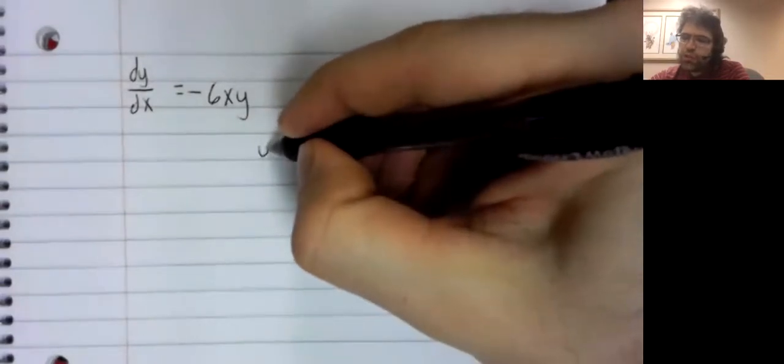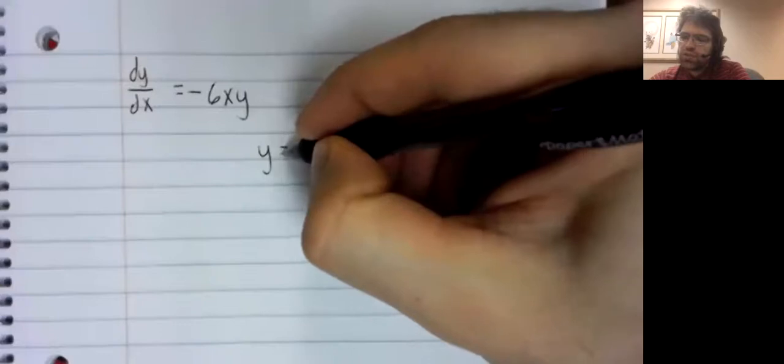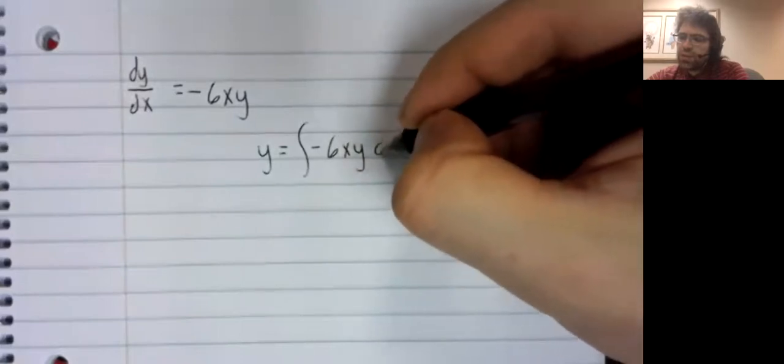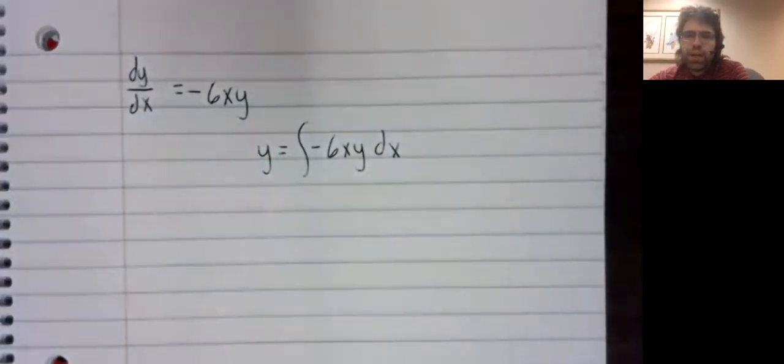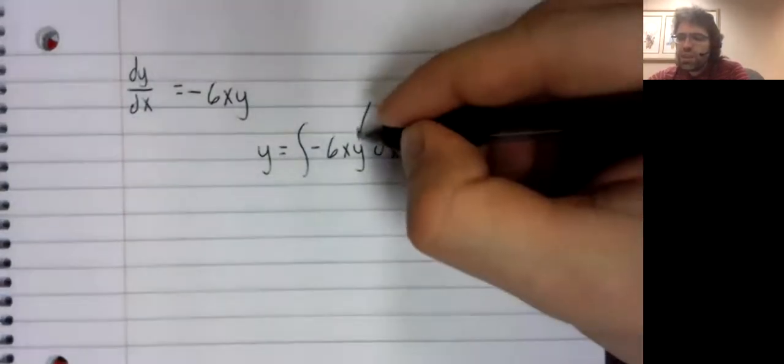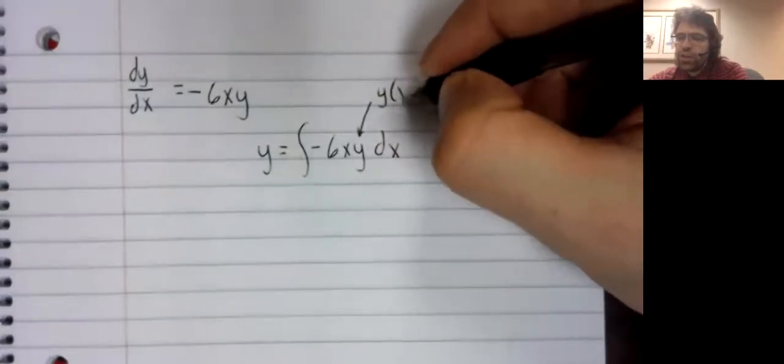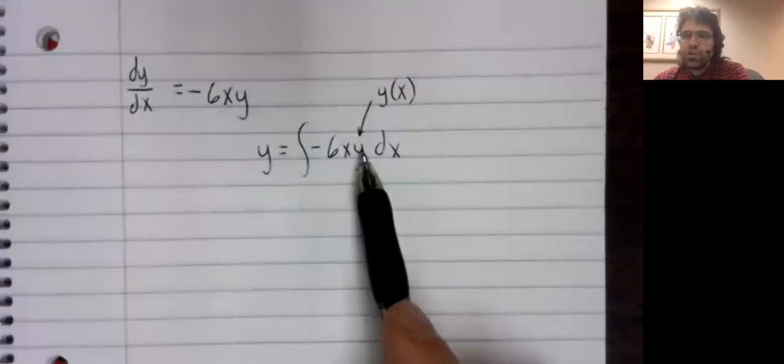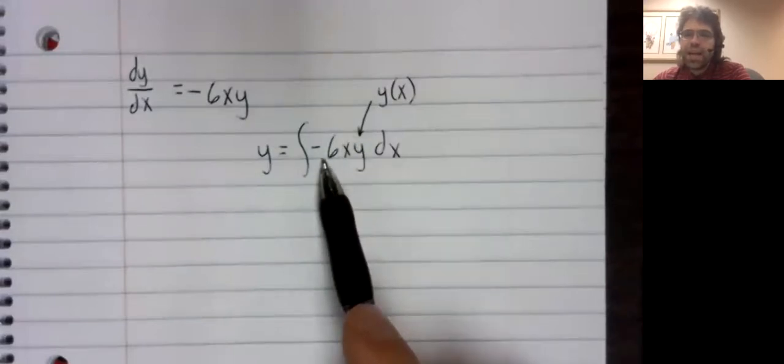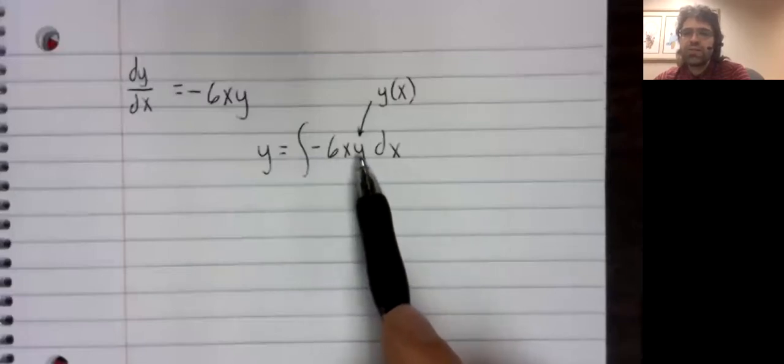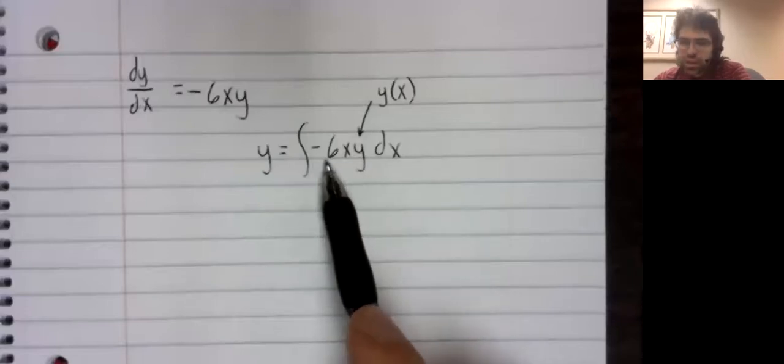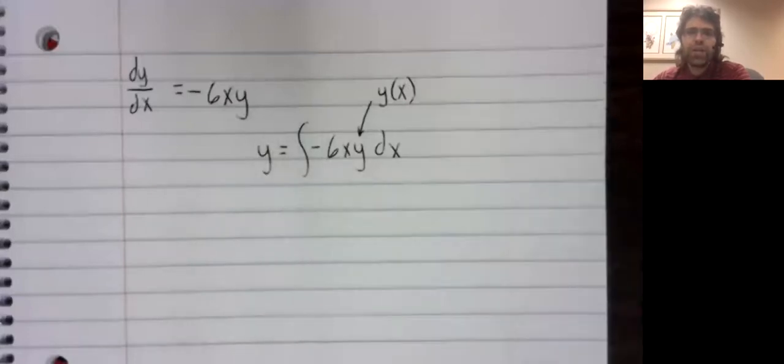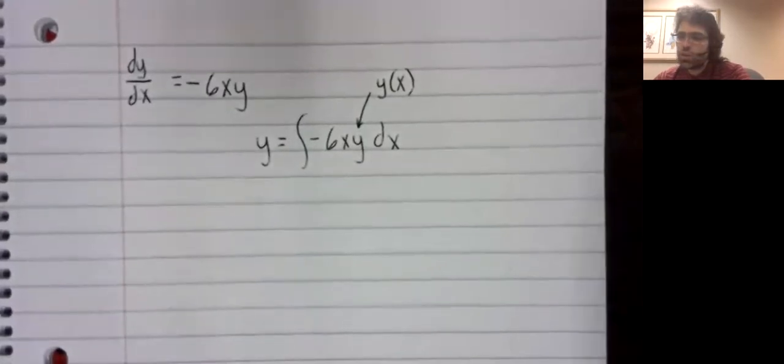Well, if you integrate both sides of this equality, you get this integral. And then you can't proceed. Y is an unknown function of x. And without knowing what y is, we have no hope of computing this integral. But until we compute this integral, we don't know what y is. So we fall into that circular situation.